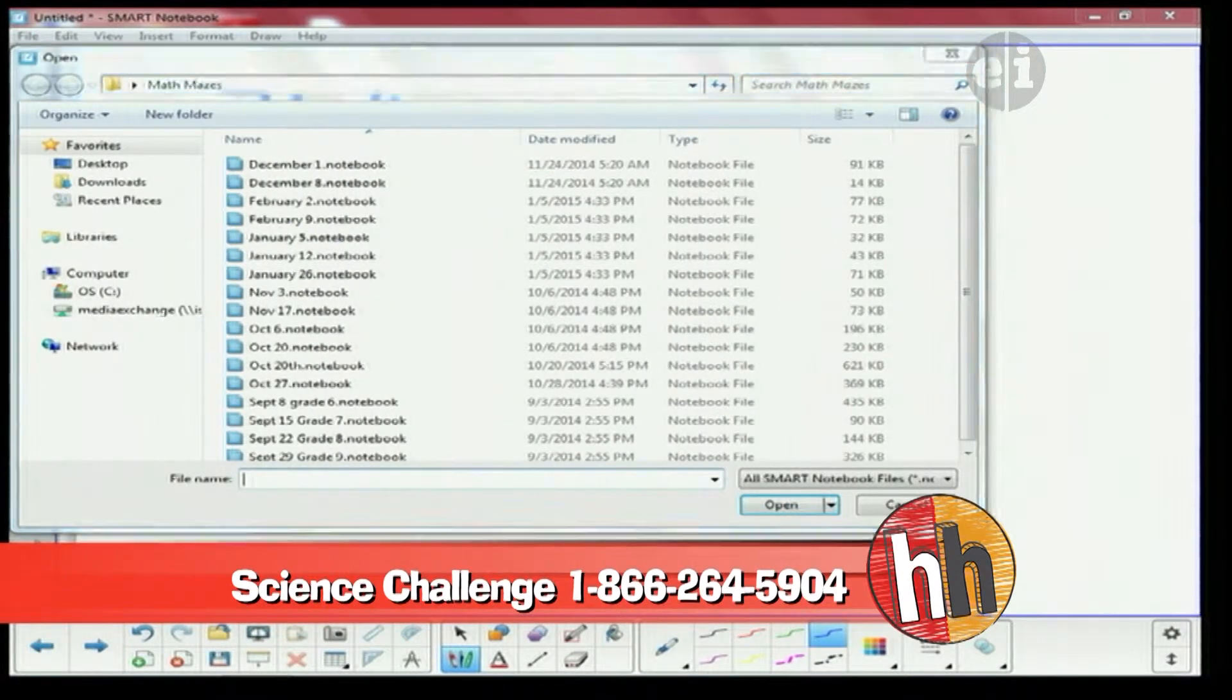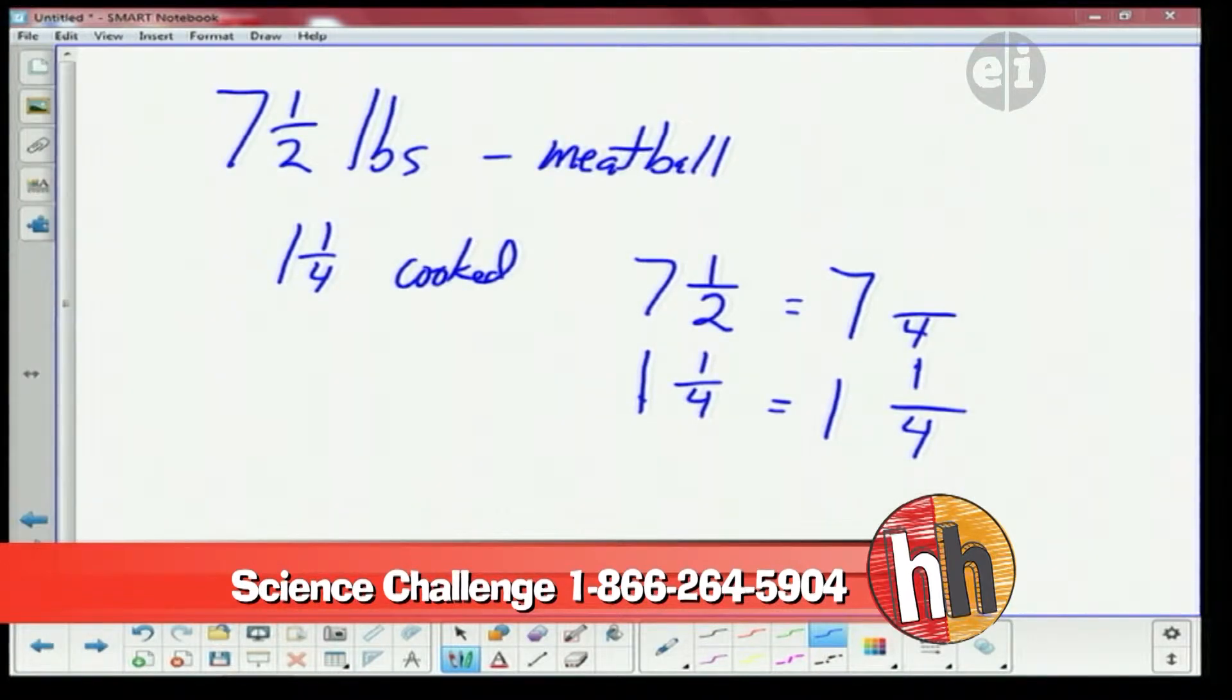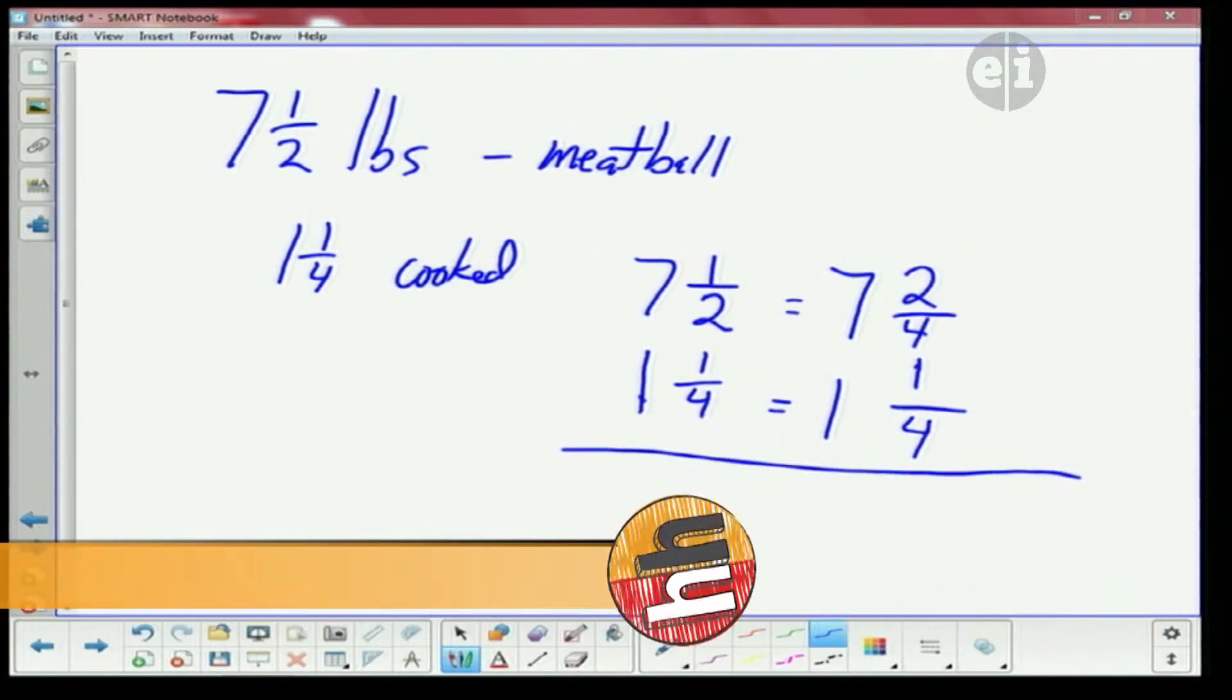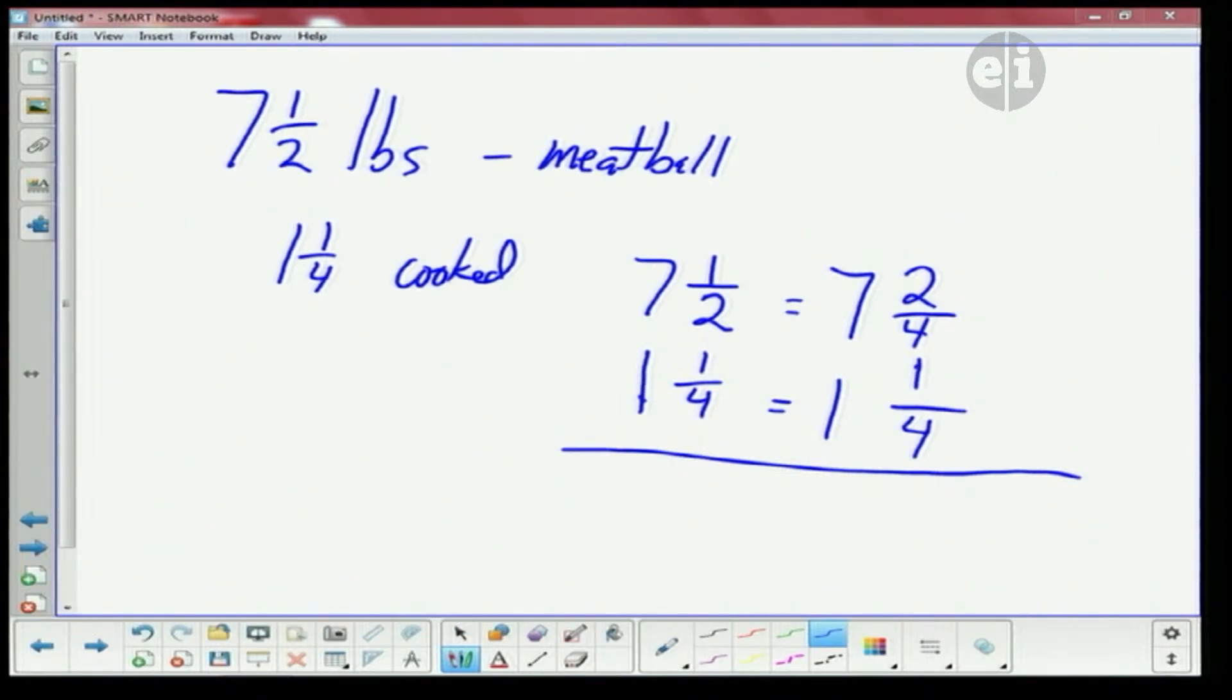All right, what did we do to that two to change it to a four? What did we multiply it by? You multiply it by two. And the rule is, whatever we do to the denominator, we've got to do the same thing to the numerator, right? Okay, so one times two is two. Now that we've got that, we're all set. Now we can work with it, right? Okay, what's the rule for subtracting fractions now that we have a common denominator? The rule is first you subtract the fraction, then you subtract the whole number.